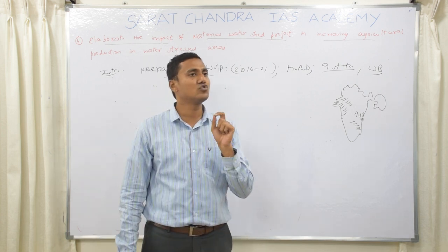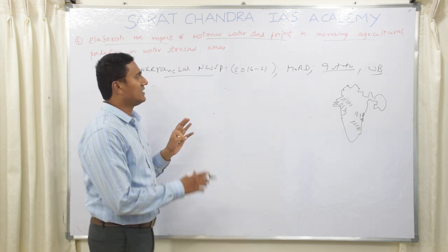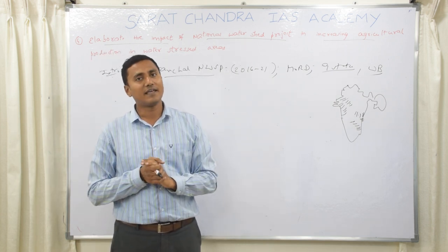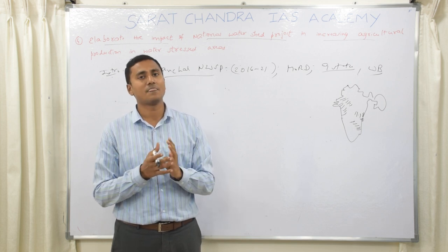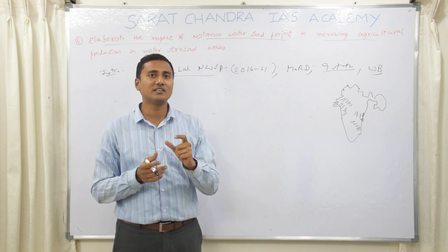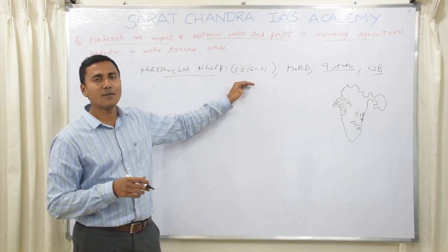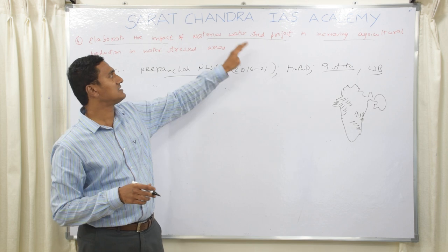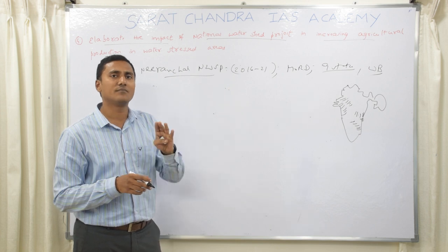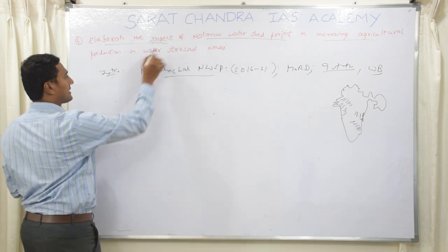If you know that this scheme aims to achieve objectives linked to other schemes like Pradhan Mantri Krishi Sinchai Yojana, Har Khet Ko Pani, and More Crop Per Drop, instead of mentioning these in the introduction, keep them for the conclusion. You should directly come to the question asked — that is, the impact on agricultural production. After writing a few facts, keep any additional information for the conclusion, then start directly with the positive impacts.